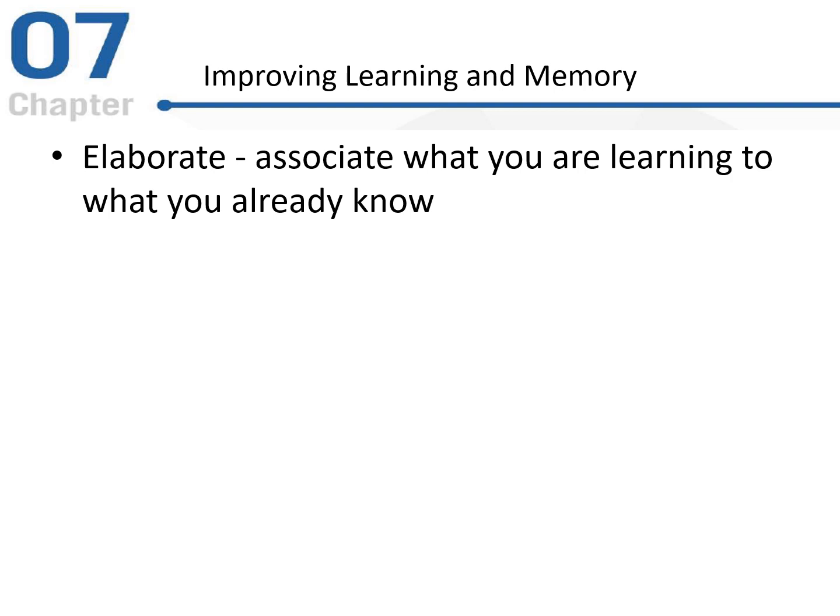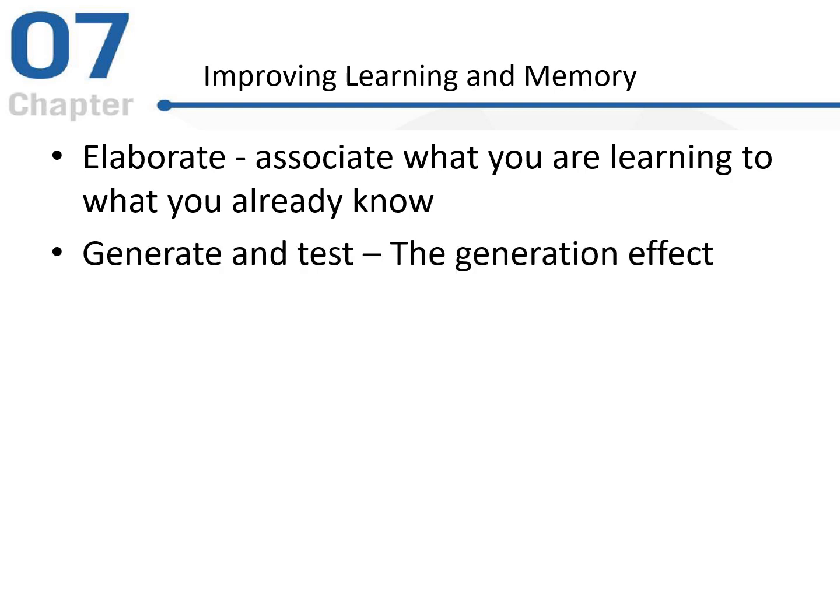Lastly, back to improving learning and memory — some tips. When we are trying to improve our learning and memory, we can elaborate. This is where we associate what you're learning to what you already know — taking items that you already have in long-term memory and making associations between new information you're trying to learn and that existing knowledge. Also, the generation effect: generate cues and things like this to help you memorize information, but also test yourself often. This will help you when it comes time to actually taking a quiz or a test.